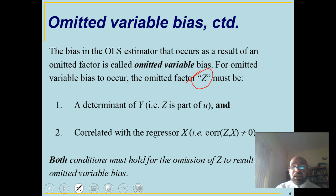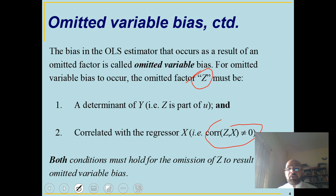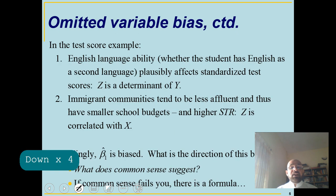Please be careful: many people will raise the question that if the correlation between z and x is not equal to zero, there will be multicollinearity. We will also discuss multicollinearity in this chapter — both perfect multicollinearity and high multicollinearity, why it occurs. I also have another video clip on multicollinearity and will give the link in this video.